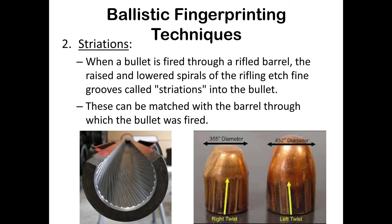Striation patterns are the grooves and lands from the rifle barrel. As the bullet is fired through the barrel, the raised and lowered spirals of the rifling etch fine grooves — called striations — into the bullet. This is what can match a bullet with the barrel it was fired through. You can see that striation patterns can go up and to the right — called a right twist — or up and to the left. Different manufacturers use different rifling techniques; some spin the drill to the right, some to the left, leading to a right twist or left twist. The two different sizes would also be another example of a gross difference.